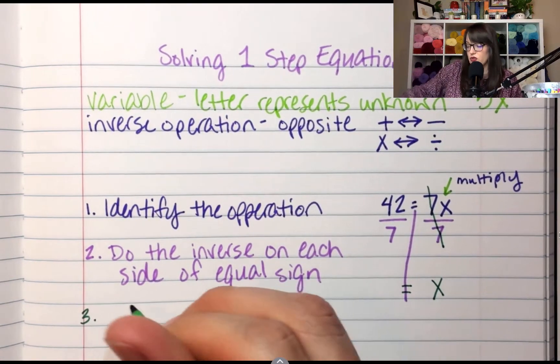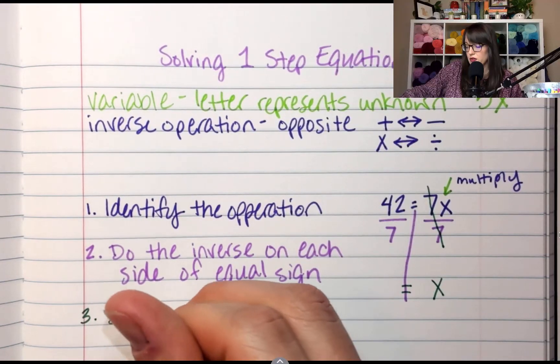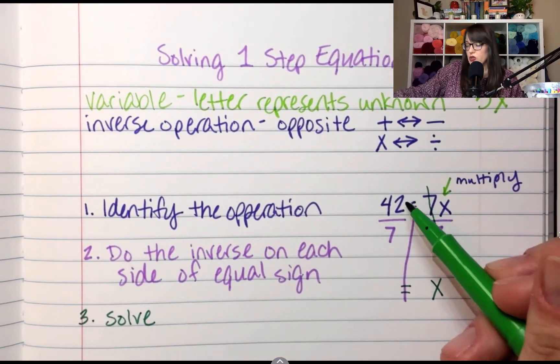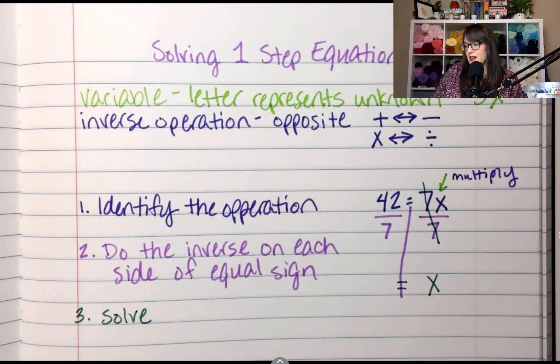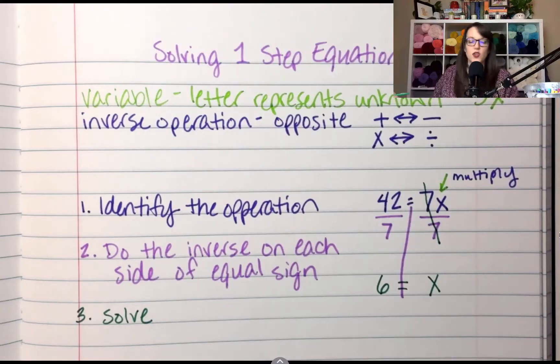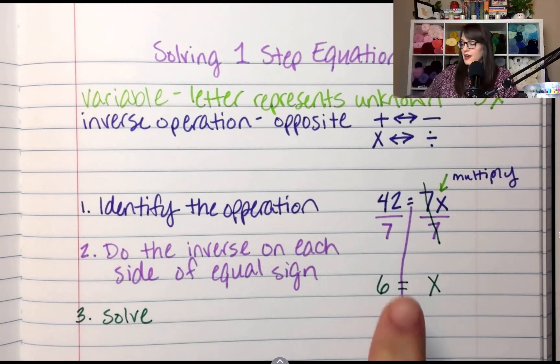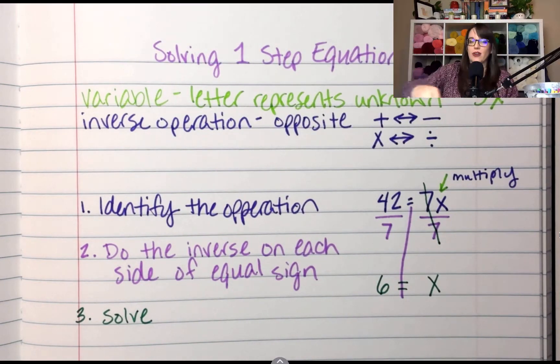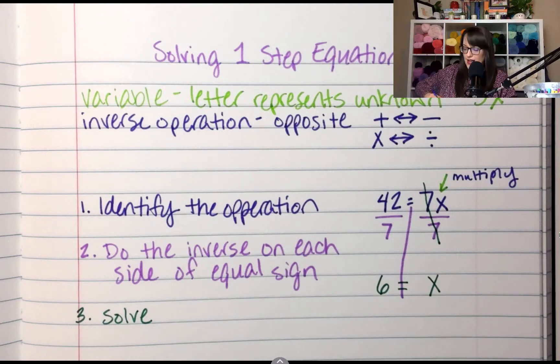So step 3 is to solve. So 42 divided by 7 is 6, so 6.